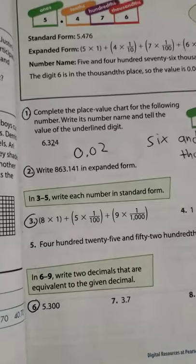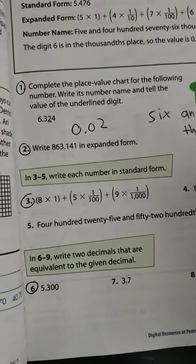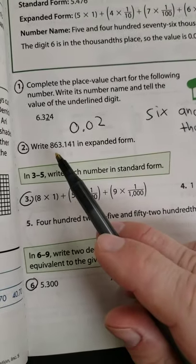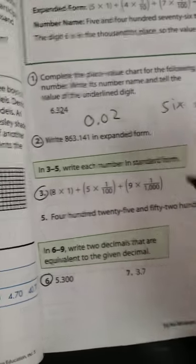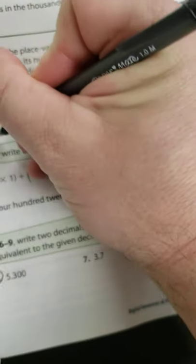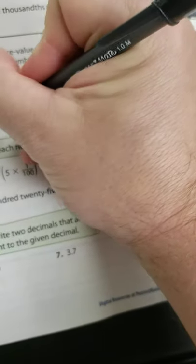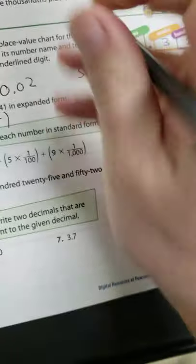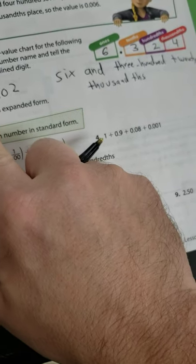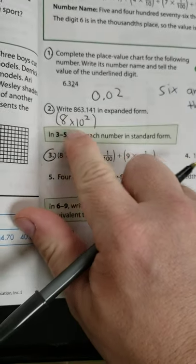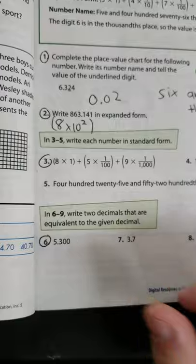All right. Number two, they ask us to write it in expanded form. So each digit, I'm going to have to have it as a value of ten. So eight times ten to the second power, because that's ten to the second power is the same as a hundred. So eight times ten to the second power. Eight is a hundred.